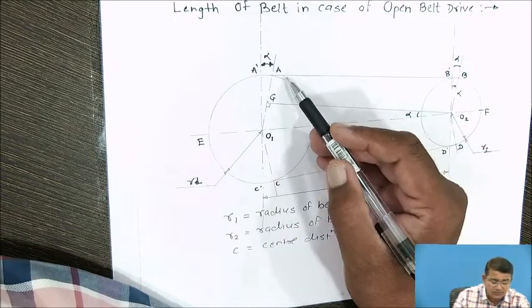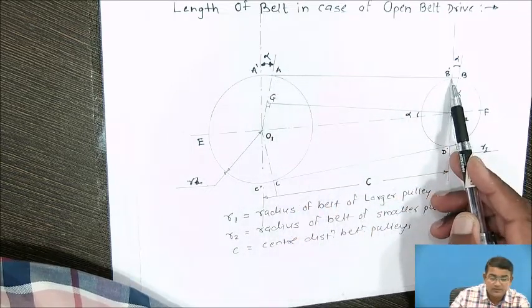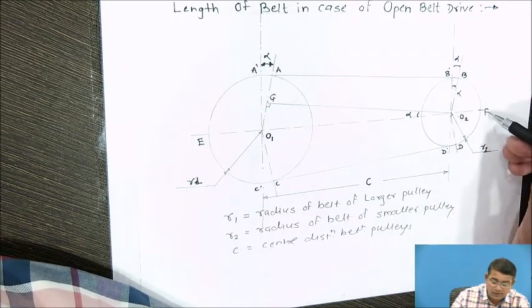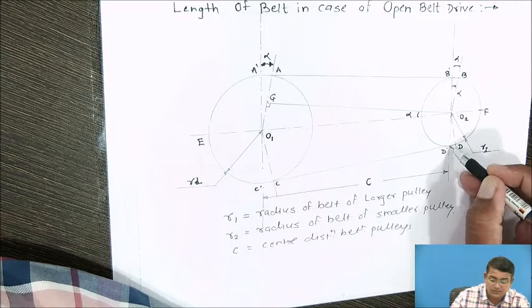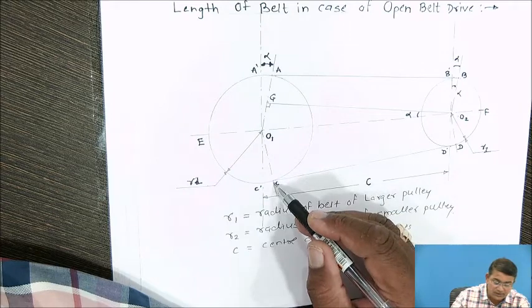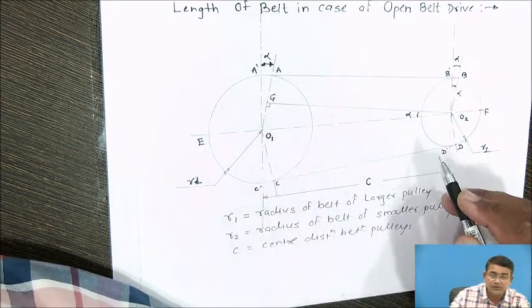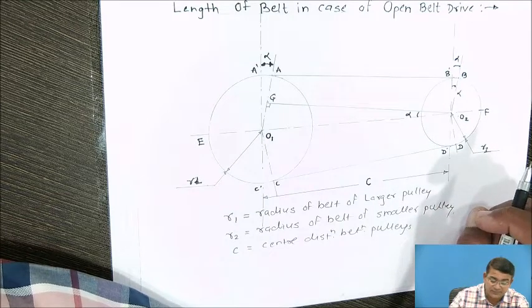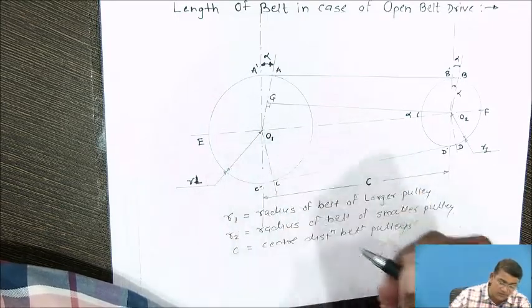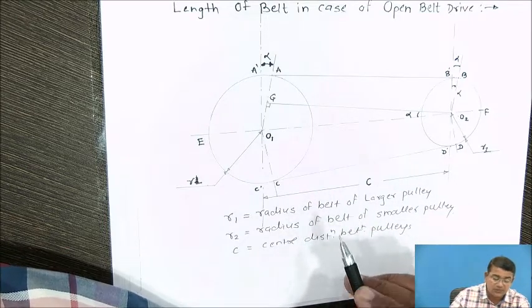The distance between these two centers is C. The belt comes in contact starting from point A to B — that is, the belt is not in contact with the pulley in this region. Then it comes in contact again from B through F to D. Then from C to D and from C through E to A. r1 is the radius of the larger pulley, r2 is the radius of the smaller pulley, and C is the distance between the two shafts.